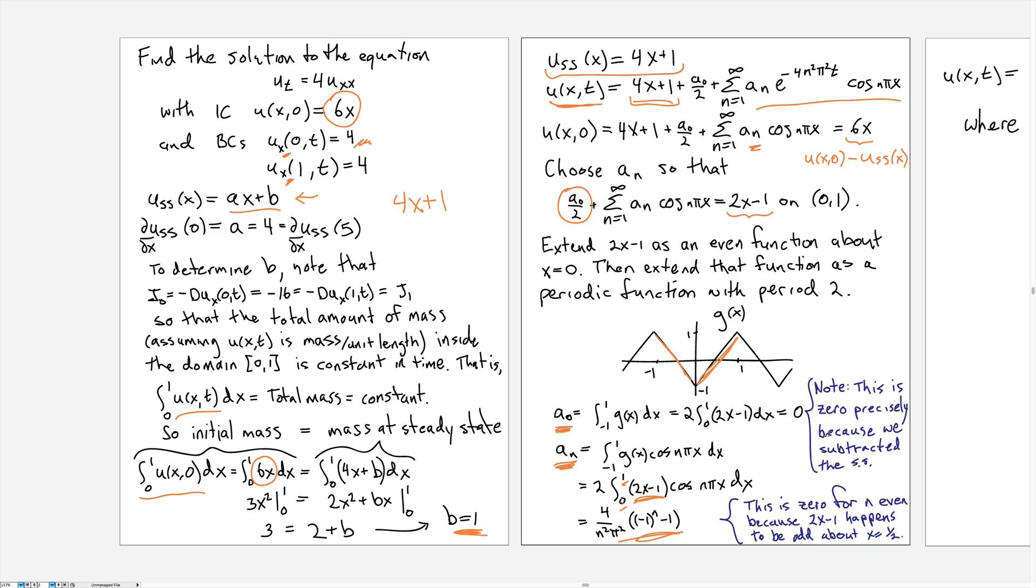So the a_0 came out to be 0 exactly because we subtracted off the steady state. And what do I mean by that?